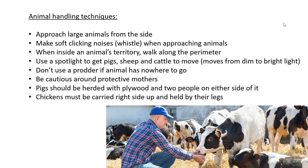Also use a spotlight to get pigs, sheep, or cattle to move. This is especially useful in a dim area inside a building. Animals generally move from a dim area to a bright area, so you can get them moving without shouting, forcing them, or using a prodder. However, this doesn't really work outdoors because it's sunshine everywhere.